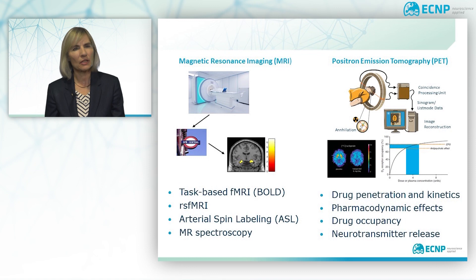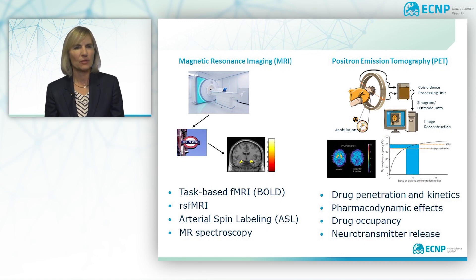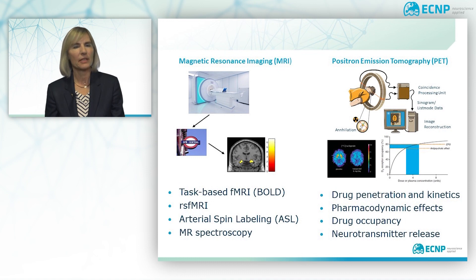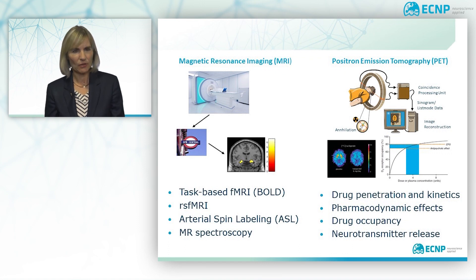PET has emerged as a particularly useful method to determine the optimal dose of a drug. In this example, you see how the dopamine D2 receptors are blocked to a varying degree in patients with schizophrenia who are treated with different antipsychotic doses of a D2 receptor antagonist. If the patient receives too small a drug dose, the treatment is inefficient, and if the dose is too large, side effects may appear. PET can also be used to estimate neurotransmitter release in response to pharmacological or physiological interventions — this currently applies for dopamine, opioid, and serotonin release.